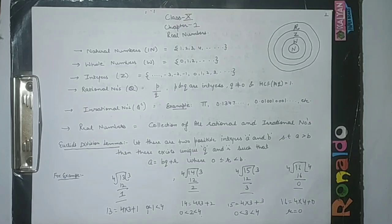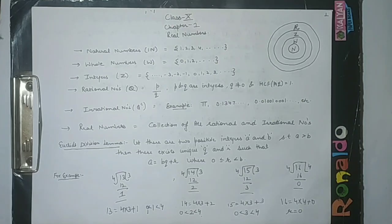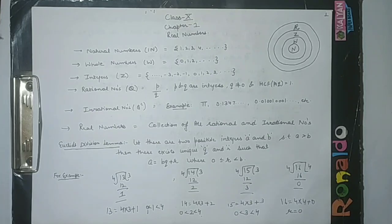Next is Euclid's division lemma. It states that let there be two positive integers a and b such that a is greater than b, then there exists unique q and r such that a is equal to bq plus r, where r lies between 0 and b. So if we divide a by b, then q will be the quotient and r will be the remainder. So a is called the dividend, b is called the divisor, q is called the quotient, and r is the remainder. This remainder r always lies between 0 and b.